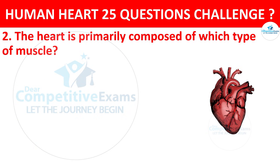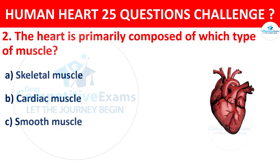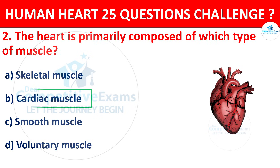Question number 2. The heart is primarily composed of which type of muscle? Options: Skeletal muscle, Cardiac muscle, Smooth muscle, or Voluntary muscle. The correct answer is Cardiac muscle.